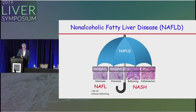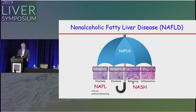We use the umbrella term NAFLD, which encompasses bland steatosis — defined as more than 5% hepatic steatosis without ballooning. NASH is defined as a phenotype that includes steatosis, which is indispensable for that diagnosis. Ballooning is not always present but should be present to cinch the diagnosis of NASH. Inflammation is absolutely necessary to make that diagnosis.